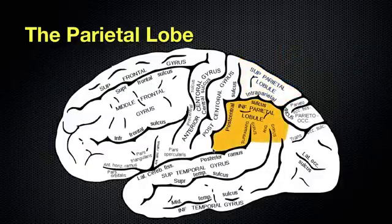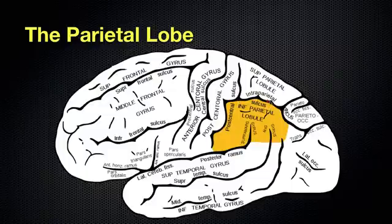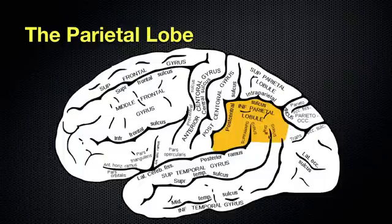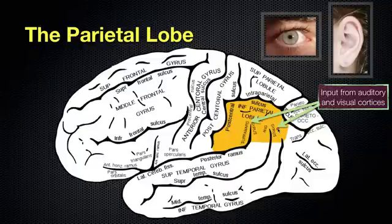The superior and inferior parietal lobules are separated by the intraparietal sulcus. 'Intra' means inside or in between — in this case, inside the parietal lobe. In the inferior parietal lobule, we have the supramarginal gyrus and the angular gyrus. These two gyri receive input from the auditory and visual cortices, processing auditory and visual information, so in order for us to see and hear, we're getting information through the supramarginal gyrus and the angular gyrus.